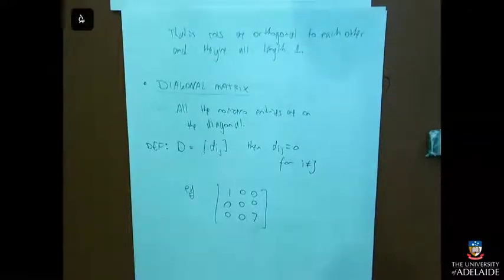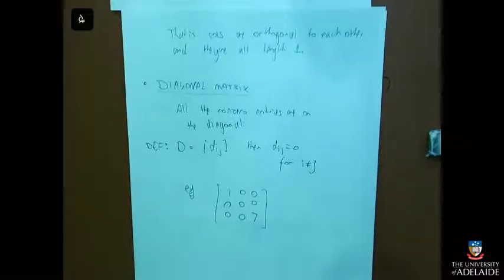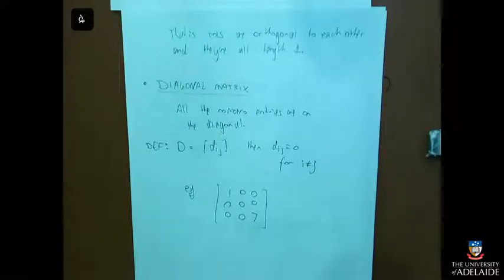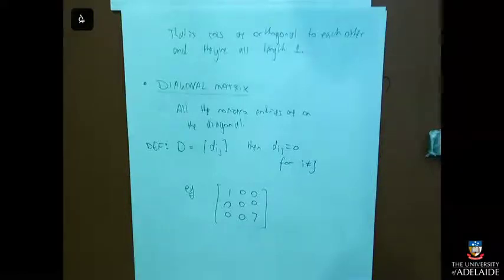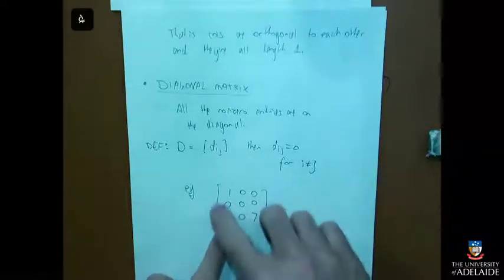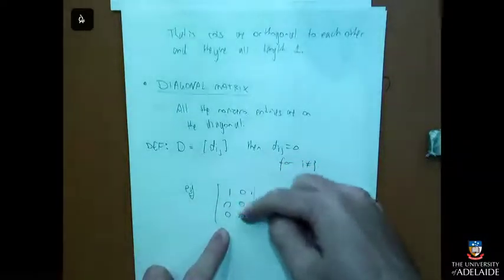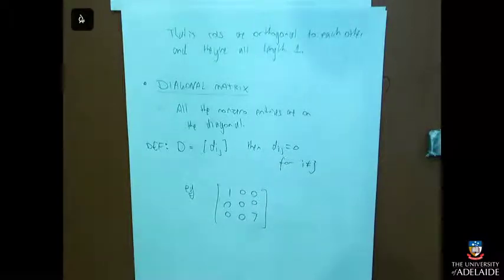Why do we care? In Maths 1B, we care because we can figure out what shape a quadric or a conic is by doing orthogonal diagonalisation. Diagonal matrices are also really useful because they're easy to work with — if you multiply two diagonal matrices together, you just multiply the matching entries along the diagonal. If you raise a diagonal matrix to the power of seven, you just raise each number to the power of seven.